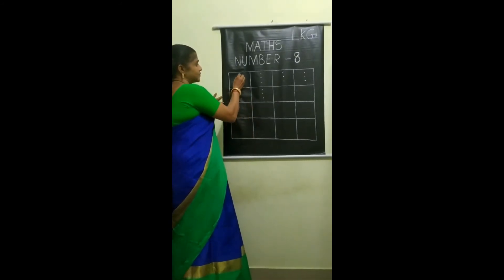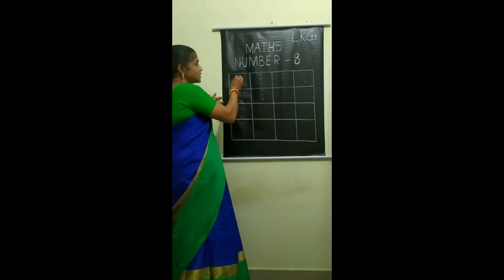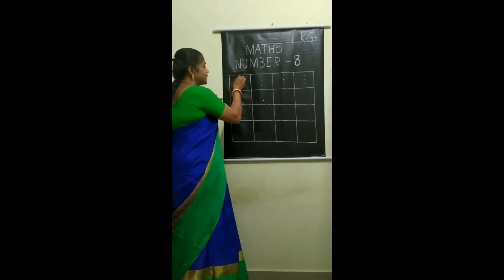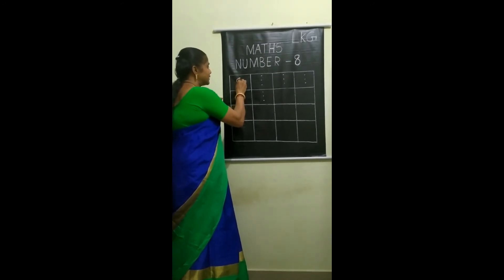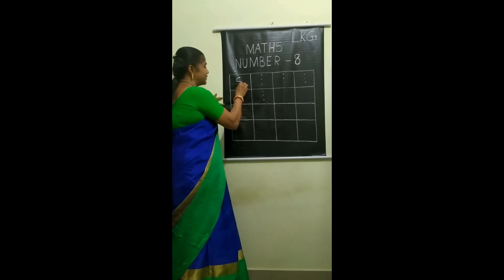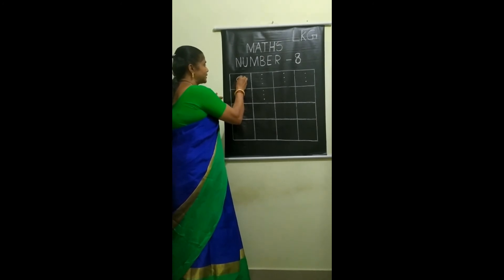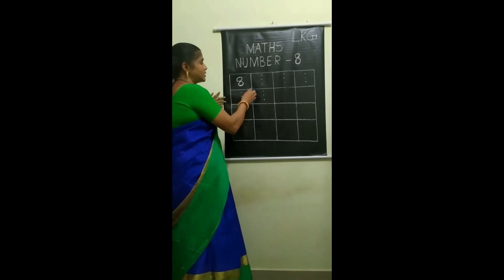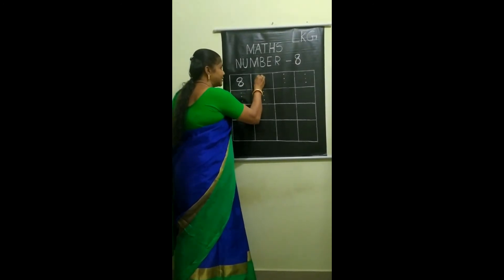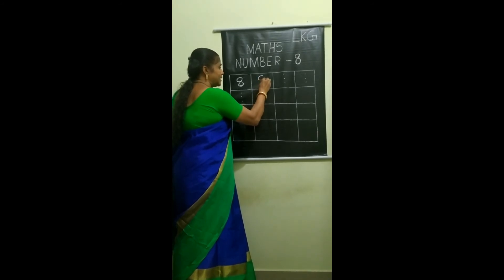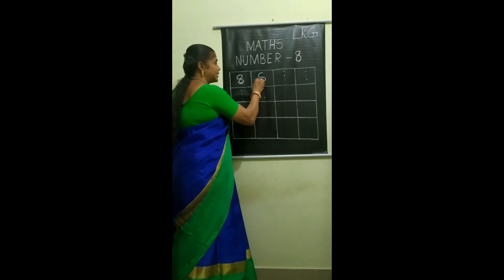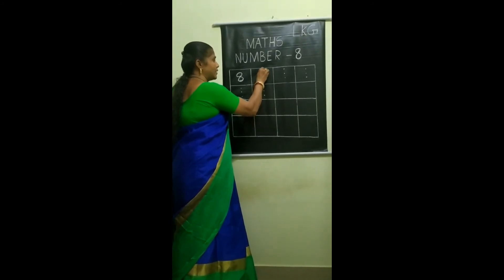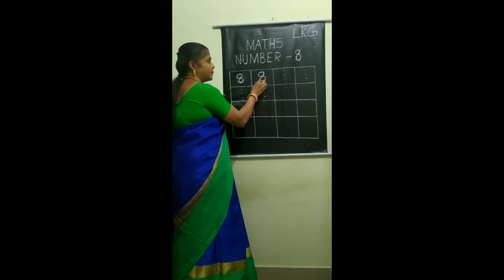Start from the dot. Right curve down, then left curve down, then right curve up, then left curve up. This is number 8. Once again: right curve down, then left curve down, right curve up, then left curve up. This is number 8.